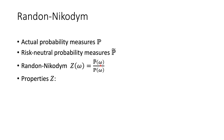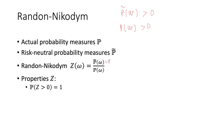This random variable Z has several properties. The first is that the probability Z is greater than zero equals one. This is obvious: we assume P-tilde of outcome omega is greater than zero and P(omega) is also greater than zero. Since both the numerator and denominator are positive, the ratio is always positive — so there's no way this ratio can be less than zero.